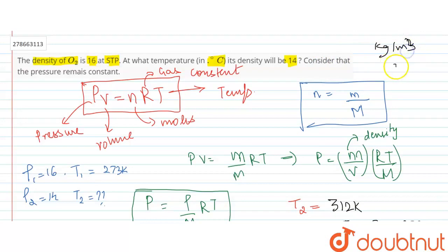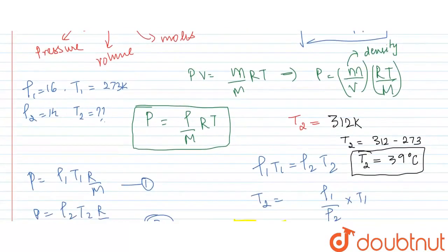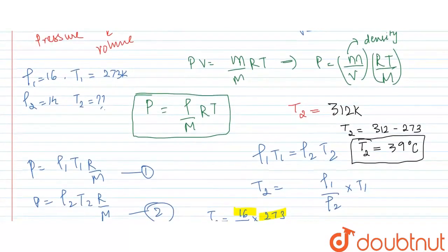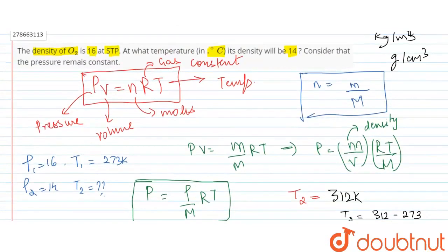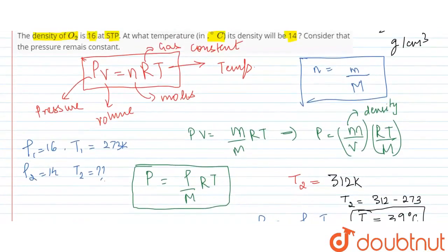In CGS units, it would be grams per cubic centimeter. Even though no density units were provided in the problem, the correct answer is T₂ equals 39 degrees Celsius.